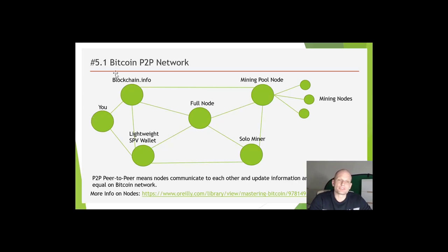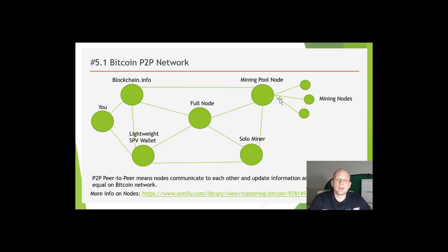Imagine you are a government wanting to shut down the Bitcoin network, which consists of 20 to 25 million nodes. You would have to go to all 25 million people at the same time — first finding out who is running nodes and where, then reaching all of them simultaneously. That is the only way to shut down Bitcoin. If even one or two nodes remain online, the other nodes when they come back online will get the blockchain information from those remaining nodes.